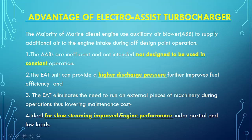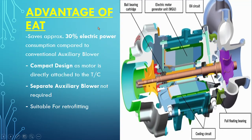The EAT is ideal for slow-steaming and improves engine performance under partial and low loads. It saves approximately 30 percent electrical power compared to the auxiliary blower. It has a compact design, does not require a separate auxiliary blower, and is suitable for retrofitting — meaning it can be retrofitted into a conventional turbocharger system.